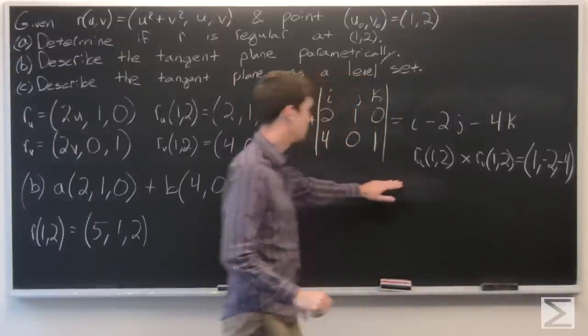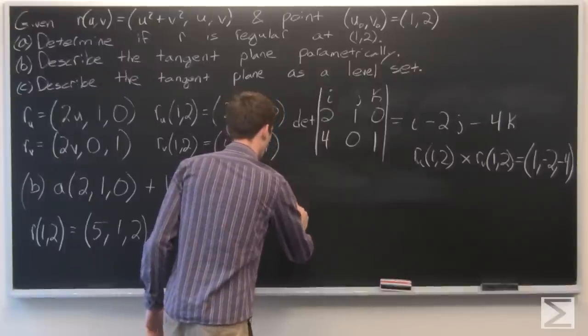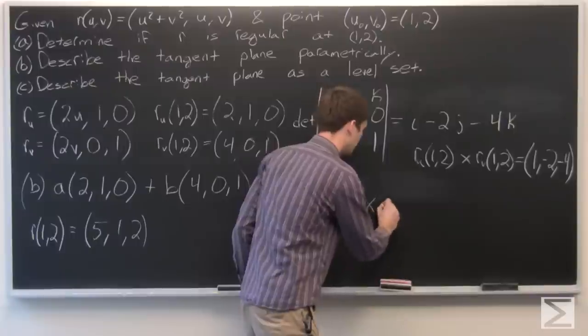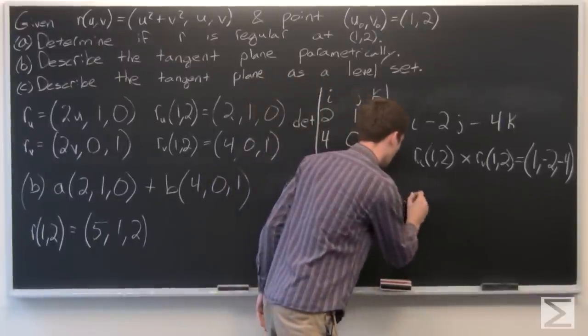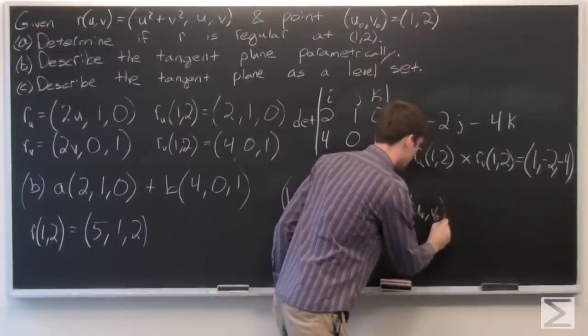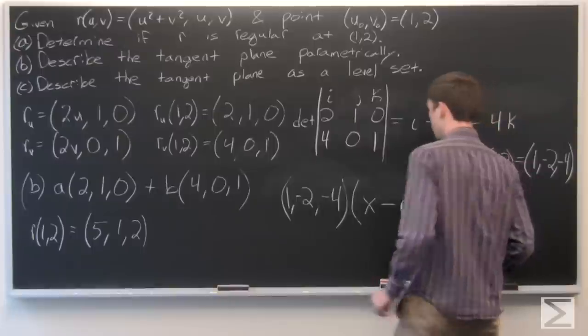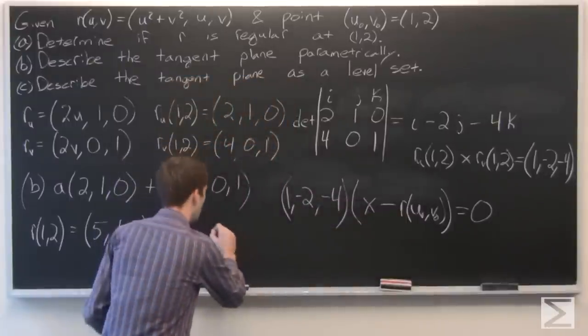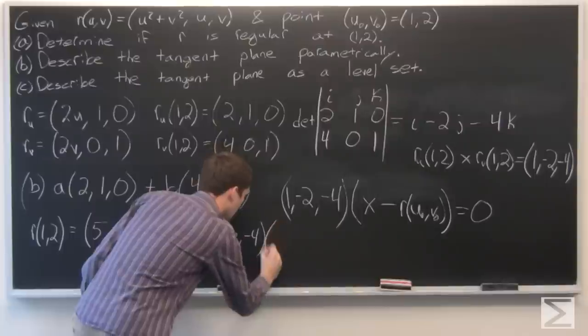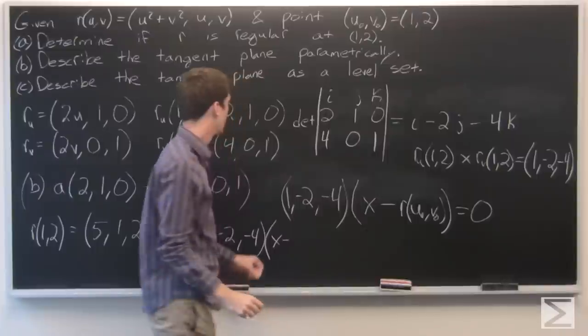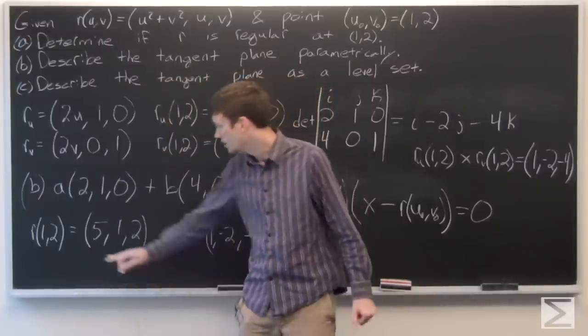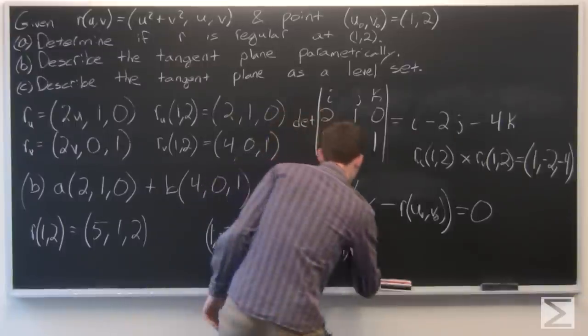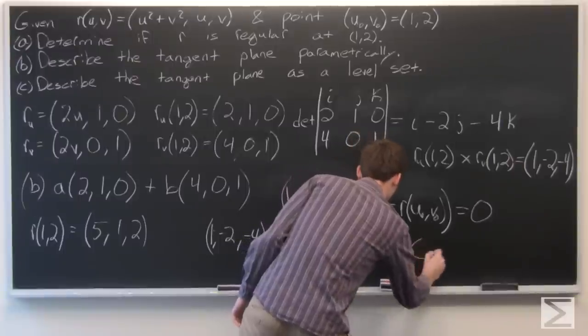And so we want to multiply this cross product times point x minus R of u naught v naught, and set that equal to 0. So this is our tangent plane as a level set. We can expand this term. So we have 1, negative 2, negative 4, times x minus, or R of u 0 v 0 is 5, 1, 2. So x minus 5, y minus 1, minus z minus 2, equals 0.